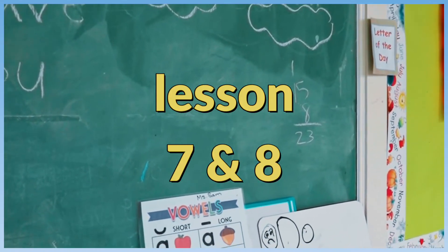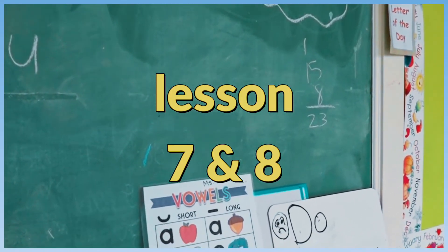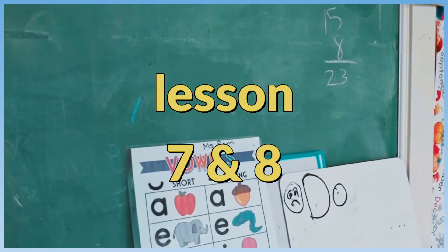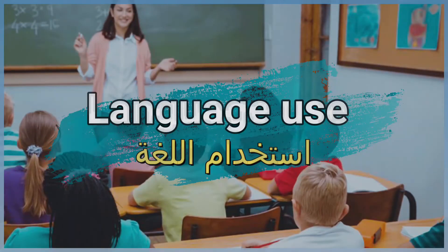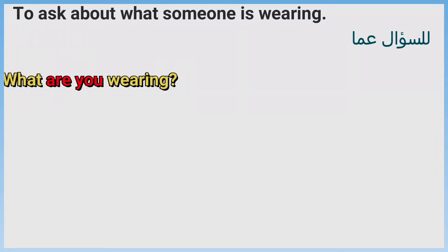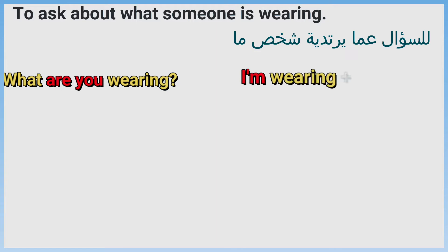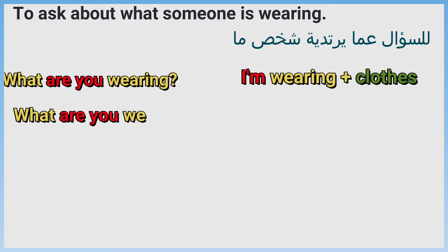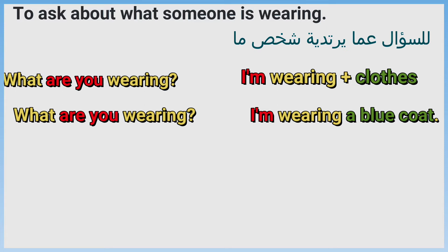In this video we will study lessons seven and eight: language use to ask about what someone is wearing. What are you wearing? I'm wearing plus clothes. Example: What are you wearing? I'm wearing a blue coat.